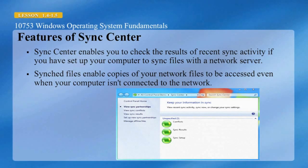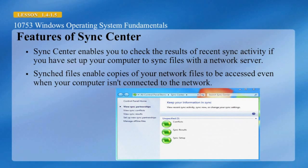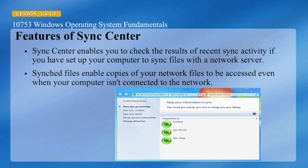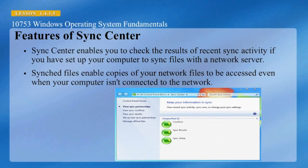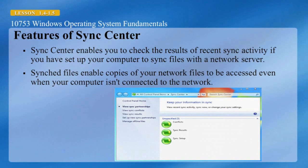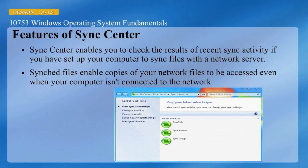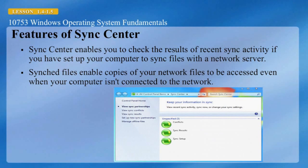The Sync Center can be accessed by clicking the Start button and typing Sync Center in the search dialog box and hitting Enter. It enables you to check the results of recent sync activity if you have set up your computer to sync files with a network server. Sync files enable copies of your network files to be accessed even when your computer is not connected to the network.